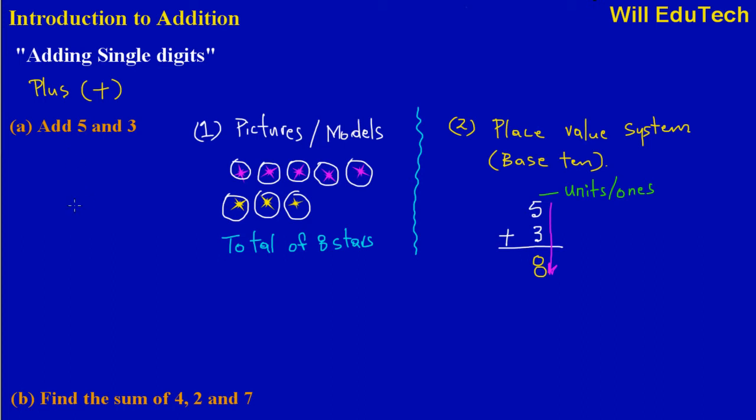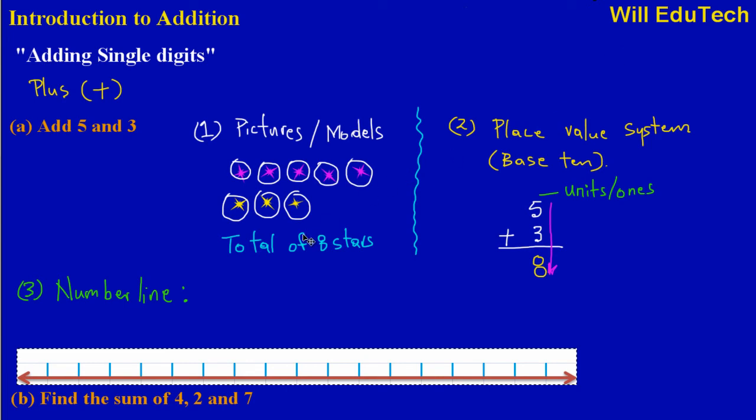Now the third and final method that I'm going to use to show you how to add these two numbers, 5 and 3, I'm going to use my number line. So I'm showing you a bunch of ways. Let's quickly grab our number line.